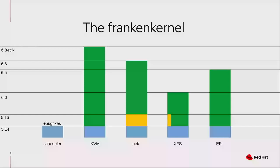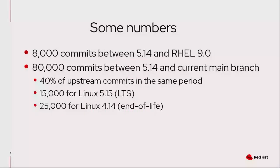So it's a bit of a mishmash of things. But the idea is that the parts that are more stable and more delicate remain more stable, while the parts where you have better testing or more requests from Red Hat customers and partners are much faster in tracking upstream. Already at the time of RHEL 9.0 there were about 8,000 commits on top of 5.14. At this point we are at 80,000, which means roughly 40% of what has happened in Linux history has made its way to CentOS Stream 9.